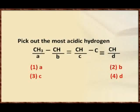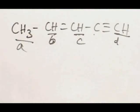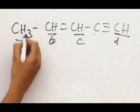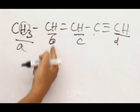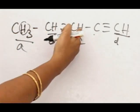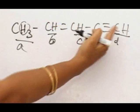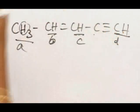Here the compound is given to you. We need to find which among the following hydrogens is more acidic. This hydrogen to be A, this hydrogen to be B, this hydrogen C, and this hydrogen D.